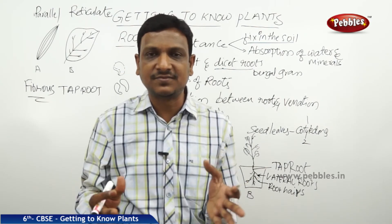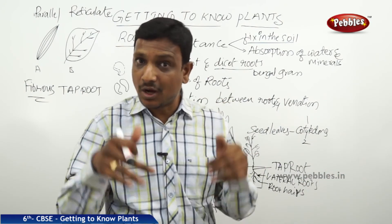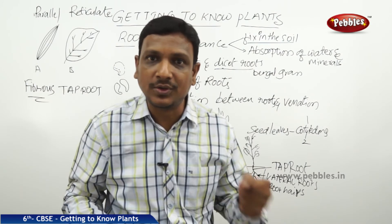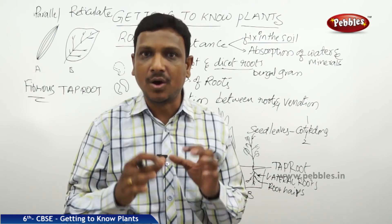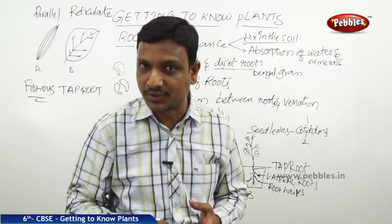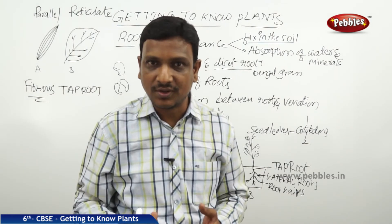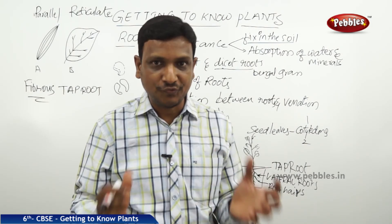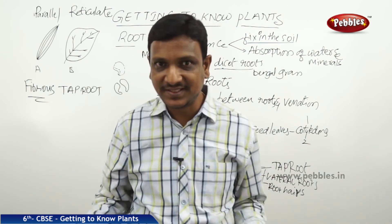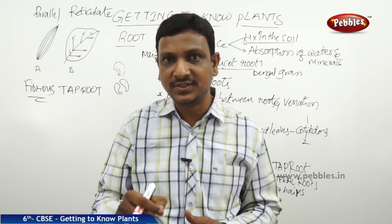How does this help us? Say for example somebody shows you one plant — you observe the leaf but you can't see the roots since they are beneath the soil. Just by looking at the leaf, you can tell the rooting system. If the leaf has parallel veins, you can say the roots are fibrous. If the leaf has reticulate venation, you can say the root system is a taproot system.